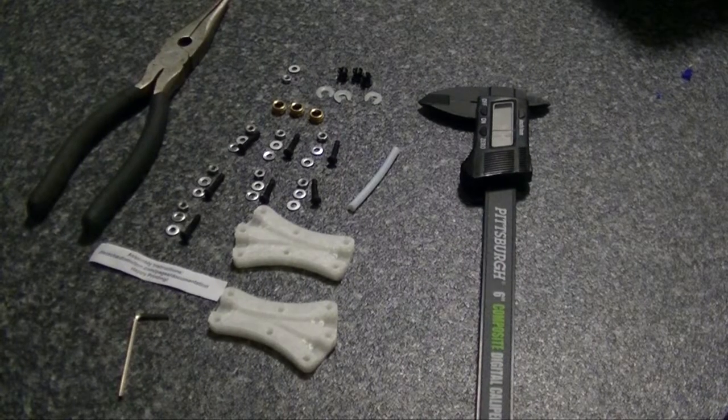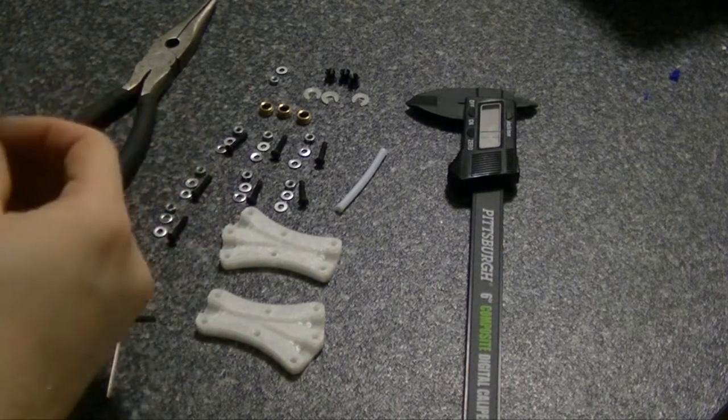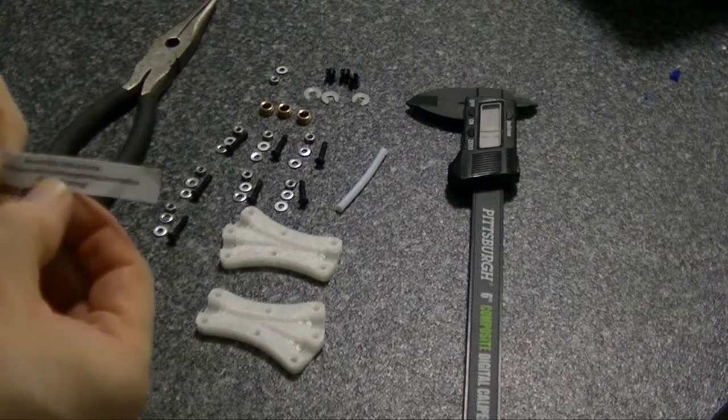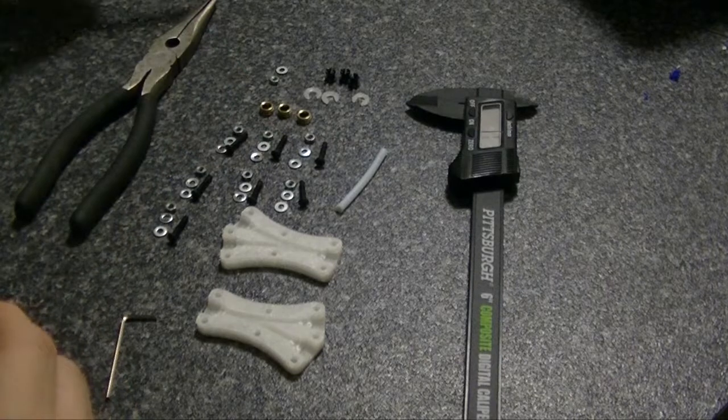Today we're going to start the assembly of the Prometheus system and we'll start by assembling the Prostruder. Here is a link to the installation instructions that was provided with the Prometheus system. This came in the box with the rest of the parts.